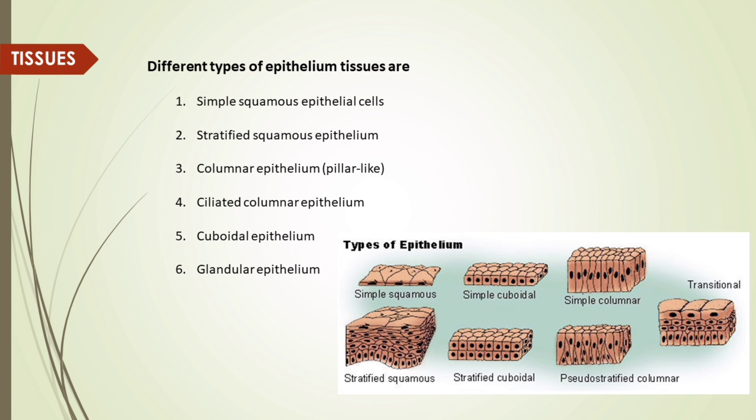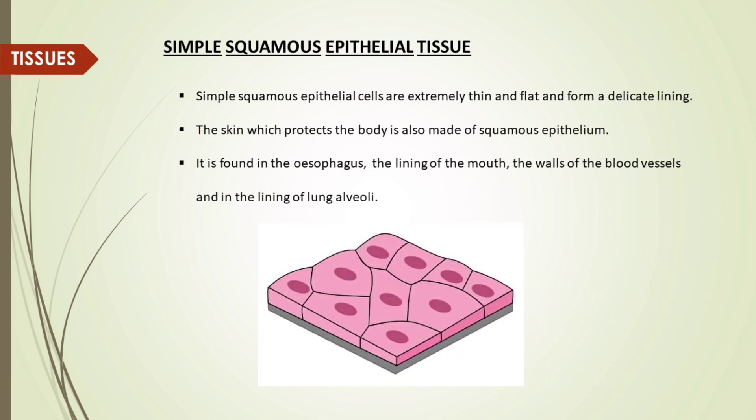Different types of epithelial tissues are: 1. Simple squamous epithelial cells, 2. Stratified squamous epithelium, 3. Columnar epithelium, 4. Ciliated columnar epithelium, 5. Cuboidal epithelium, 6. Glandular epithelium.